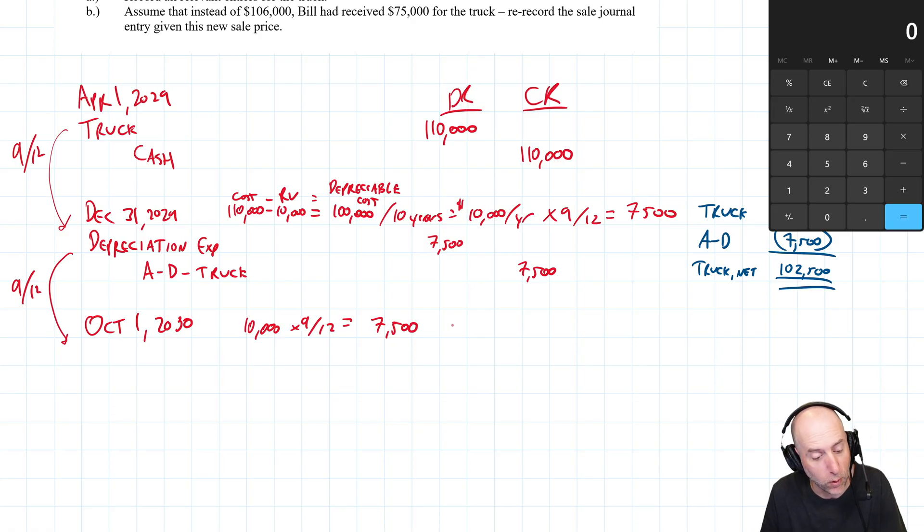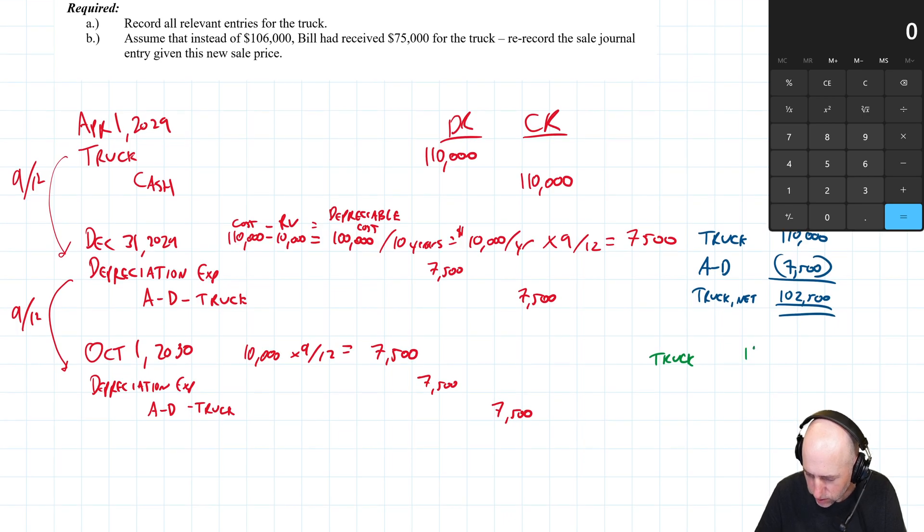It's $10,000 depreciation per year, we've got nine months to do, $10,000 times nine twelfths is $7,500 more in depreciation. Journal entry is exactly the same: debit Depreciation Expense, credit Accumulated Depreciation - Truck for $7,500. Let's update our assessment of what this truck is worth. We had a truck that we bought for $110,000, we have depreciated this truck for in total now $15,000. That's $7,500 last year during that nine month period and $7,500 this year during the nine month period. The accountant thinks this truck should be worth around $95,000 now.